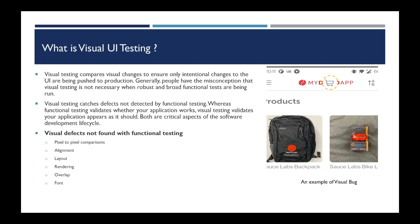Visual testing validates that your UI and your screens are appearing as expected. Both are super critical for a successful software development lifecycle. Some examples of visual defects which are not easily found using functional testing are: pixel-to-pixel comparisons, alignment and layout of the various UI elements, rendering and overlapping of UI elements, and fonts — whether the fonts and text on the application appear in the expected size, color, and type.